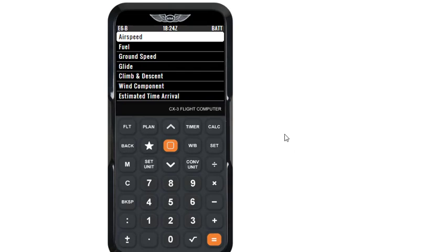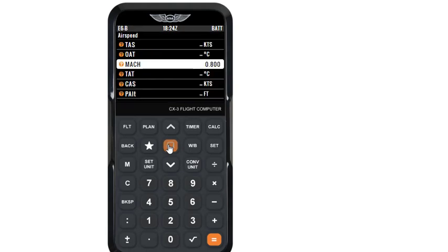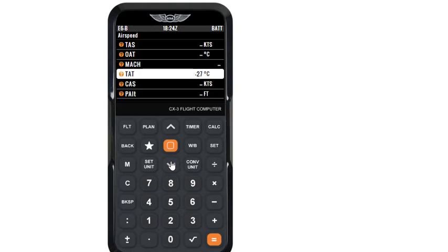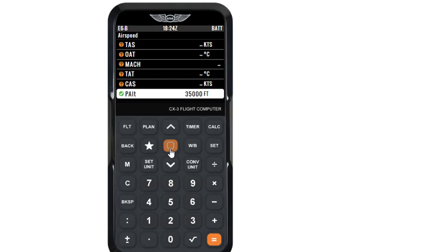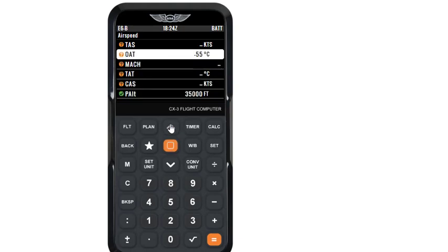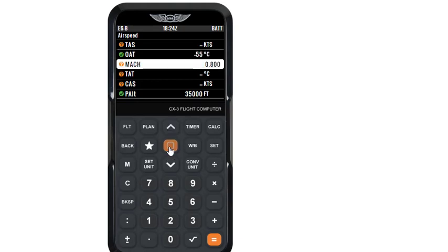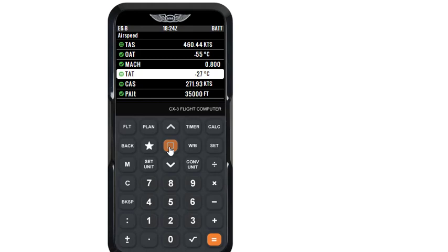Okay, let us go to flight and airspeed. In airspeed, let us enter Mach number as 0.8 and pressure altitude as 35,000. And OAT as minus 55 and Mach number as 0.8. And we get a TAS of 460.44 knots.